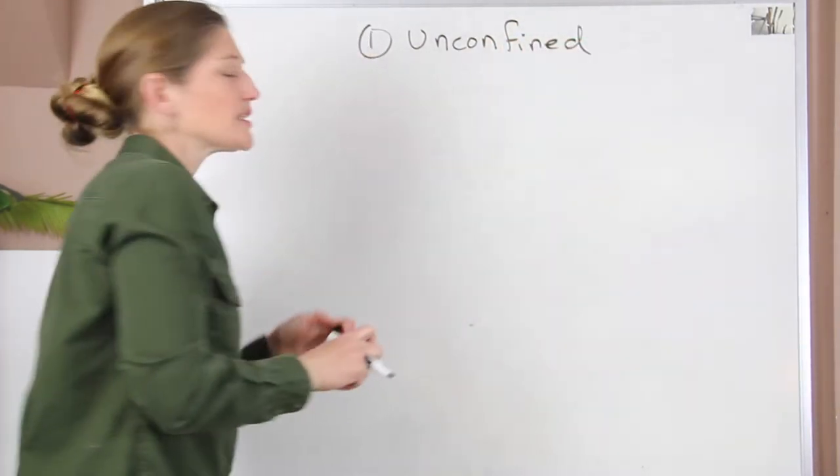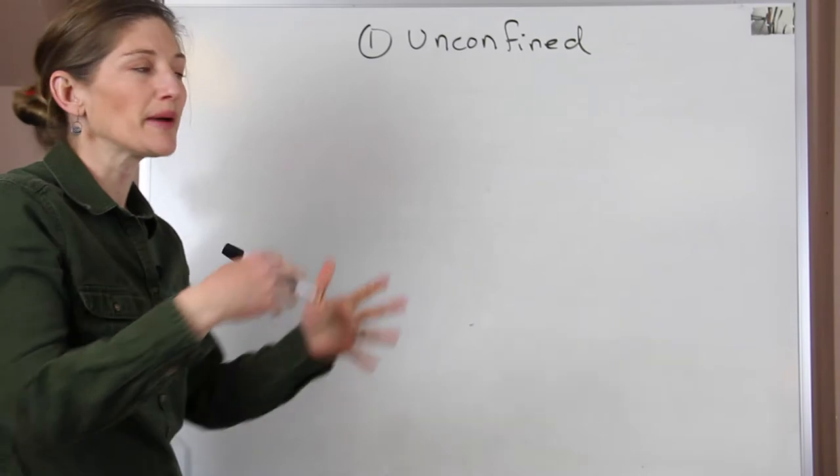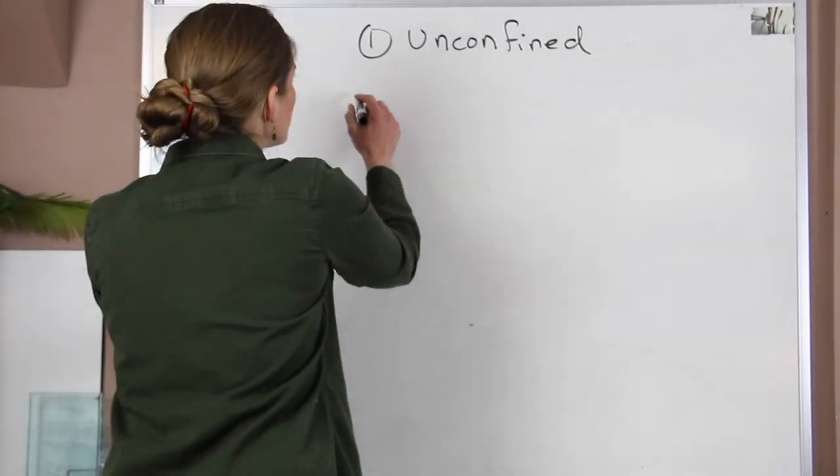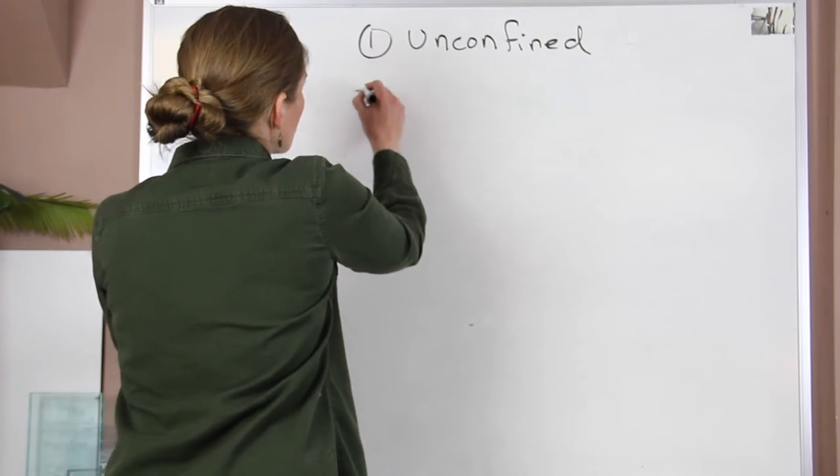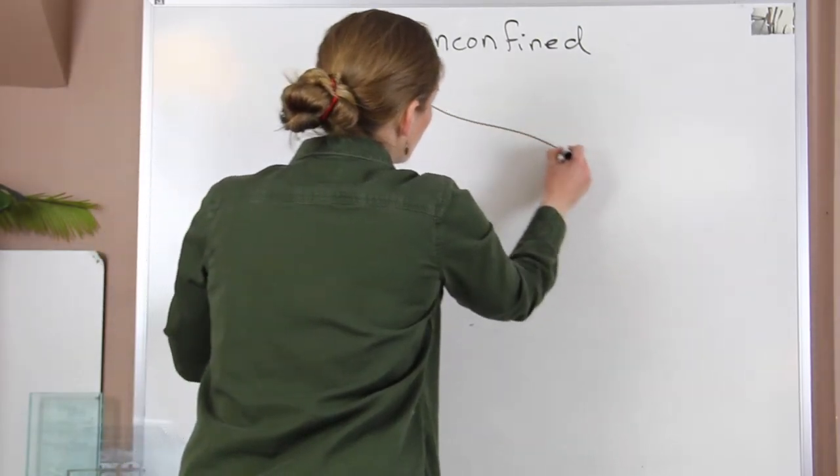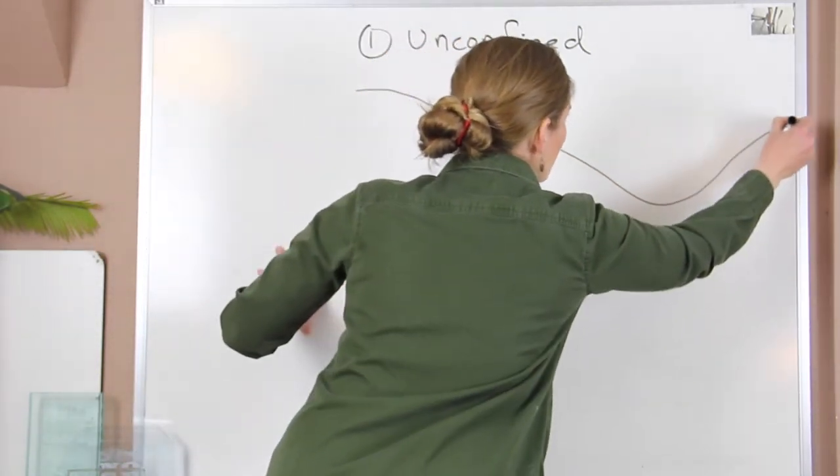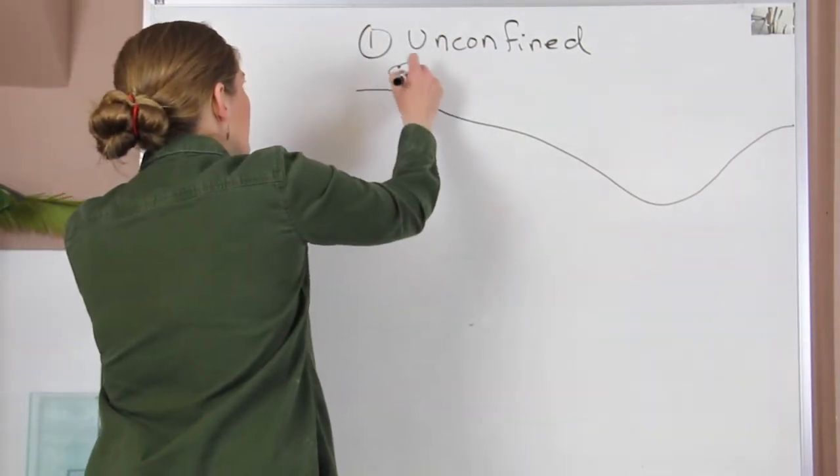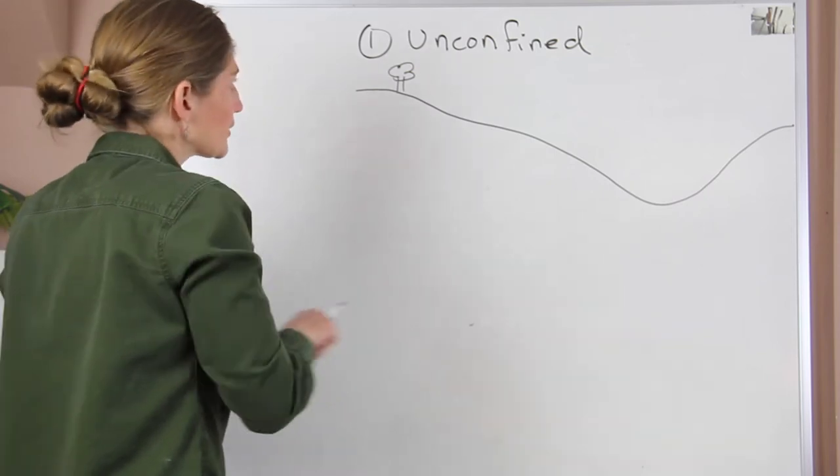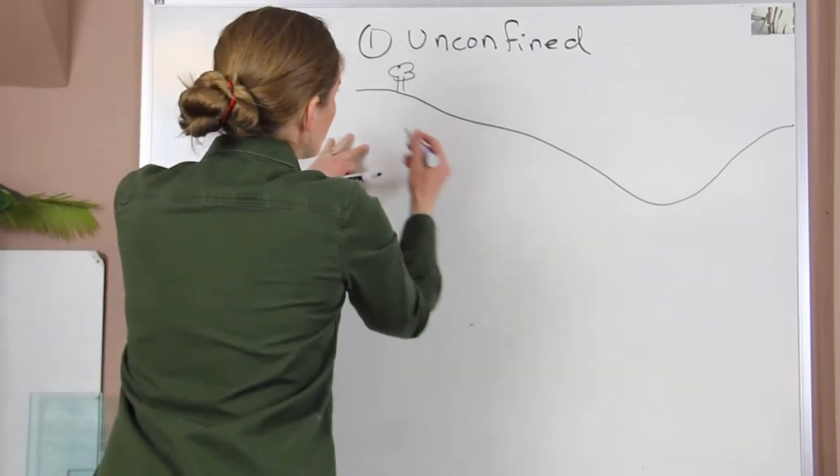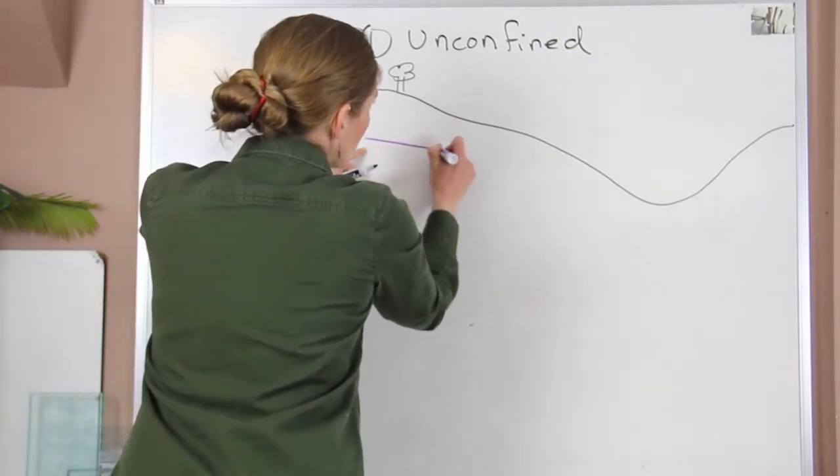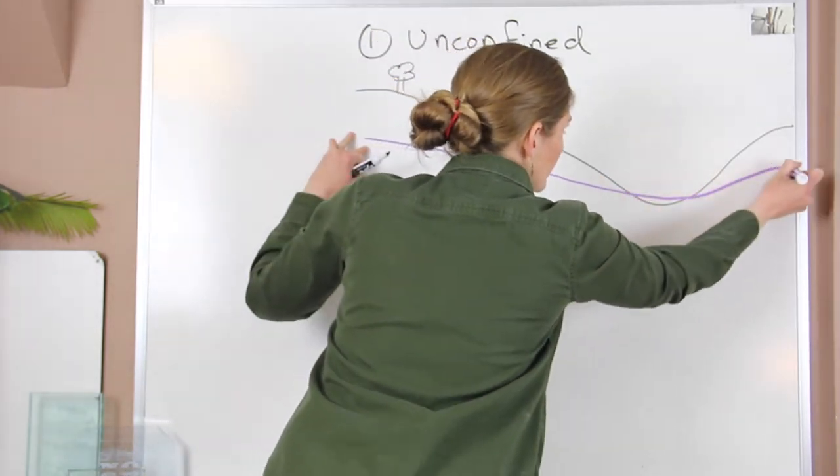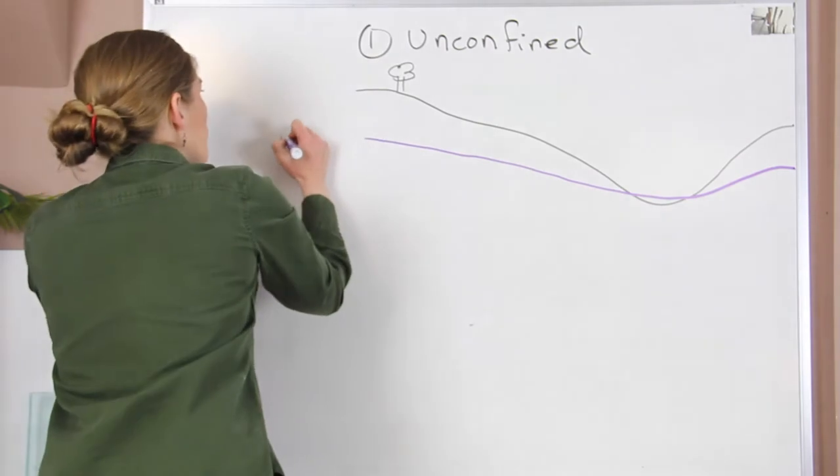Now this is just an aquifer or a water table that's not constrained by any features in the surface. It's very similar to the one we just drew. So if we have our landscape here, something looks like this—we have this topography. Again, this is a side view. So there's a tree. Our aquifer is going to generally follow the surface of the land, so it's high where it's high and it's going to go back up. Okay, so there is our water table.